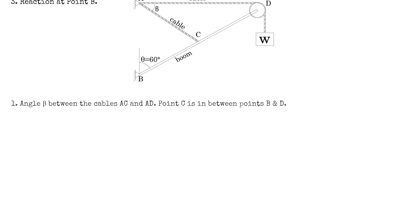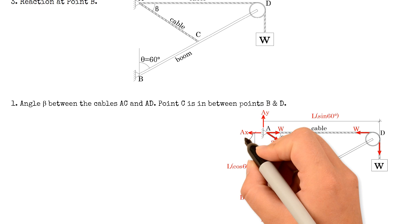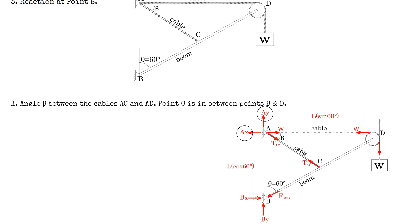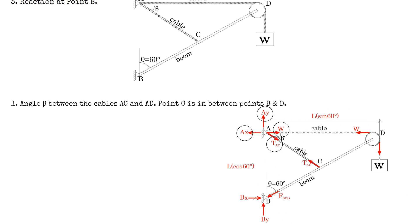Now to solve the first problem, let us analyze this diagram. First, at point A, the forces we have are the horizontal and vertical components of the reaction at point A, which are denoted as AX and AY. At point B, we have the horizontal and vertical components of the reaction at point B, which are denoted as BX and BY.